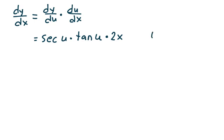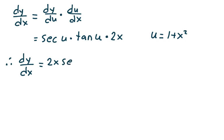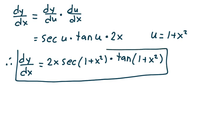Remember that u is 1 plus x squared, so dy/dx is equal to 2x secant of 1 plus x squared times tangent of 1 plus x squared. And that's how you do problem number 13.